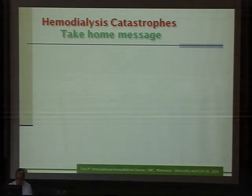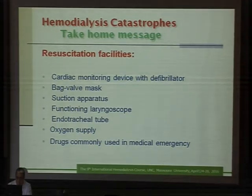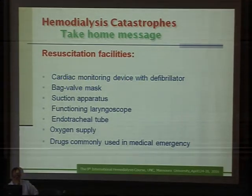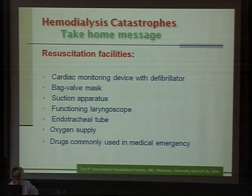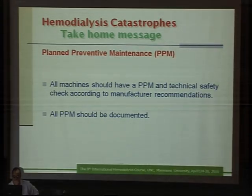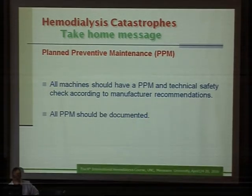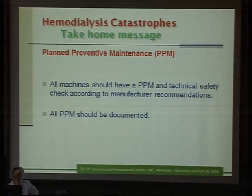The take-home message: resuscitation facilities — including cardiac monitoring devices, defibrillator, bag-mask, suction apparatus, laryngoscope, endotracheal tube, oxygen supply, and emergency drugs — together with trained staff, should be available in the dialysis unit. All machines should have a planned preventive maintenance schedule and technical safety checks according to manufacturer recommendations. Each dialysis unit should have its own manual and guidelines that are strictly followed.